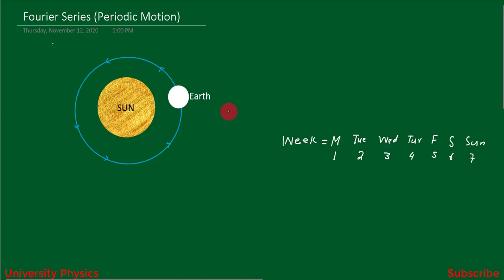After seven days, Monday repeats itself. The 8th day of March falls on Monday, the 9th on Tuesday, the 10th on Wednesday, and the 14th on Sunday. So if you look at this, after seven days Monday repeats itself, Tuesday repeats itself, Wednesday repeats itself, and all other days also repeat their names.